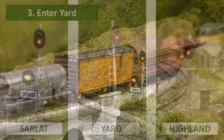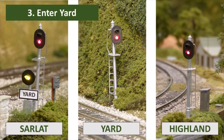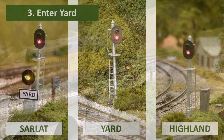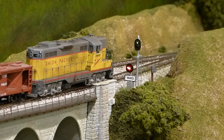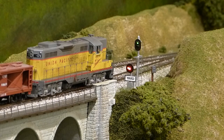If a train is sitting at Sarlott Viaduct waiting to enter the yard, the tall dwarf signal will show yellow once the Yardmaster has given permission to enter the yard and the Arduino has verified the route. Here we see a train waiting to enter Waverly Yard.